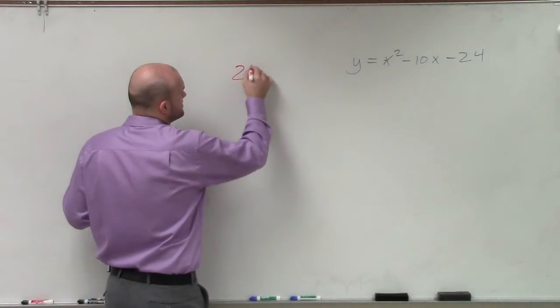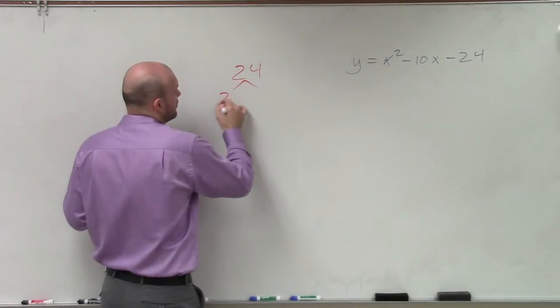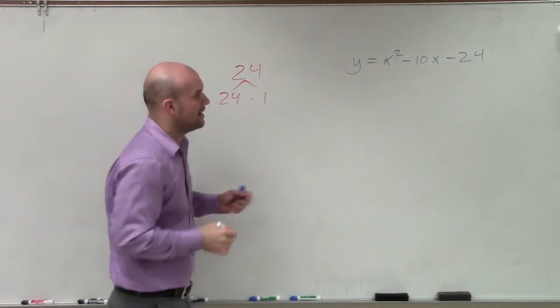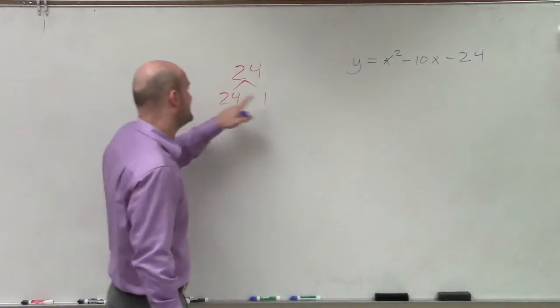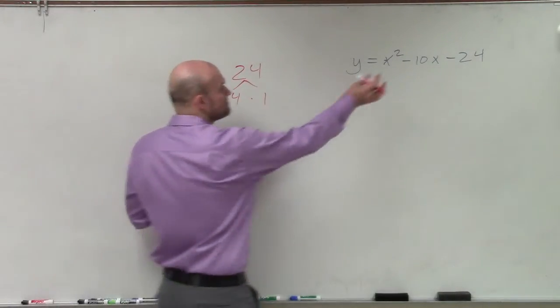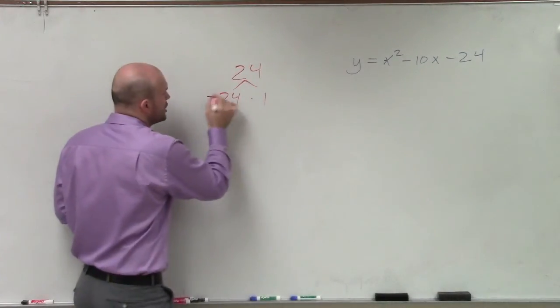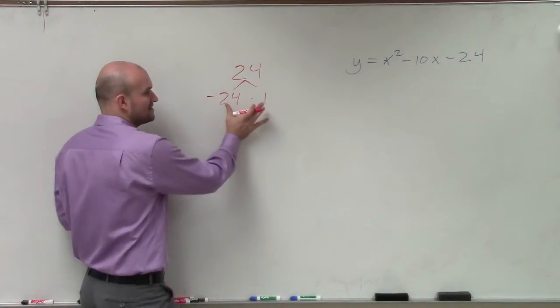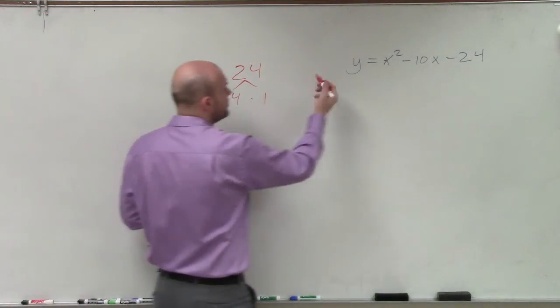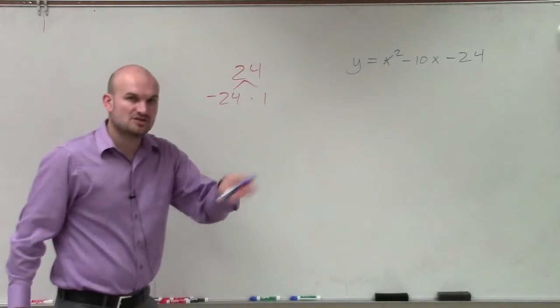So let me go over what I'm talking about. So if I have 24, well, we know it's 24 times 1, right? But again, to multiply to give us negative 24, one of these has to be negative. Well, since my middle term is negative, I know the larger of the two have to be negative. Now, this is not correct because negative 24 plus 1 does not give us negative 10, so let's go ahead and continue.